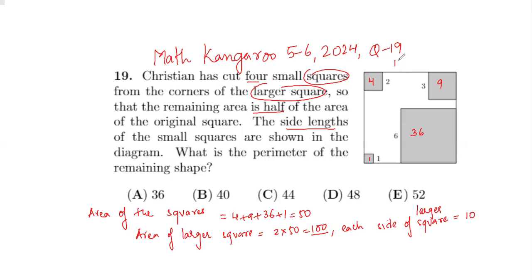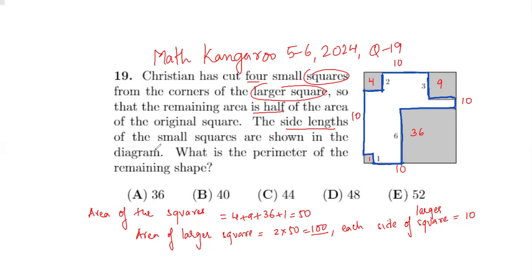So the dimensions of the larger square are 10 on all four sides. Now we need to find the perimeter of the remaining shape — the blue outlined shape. Let's write the dimensions of the blue shape.